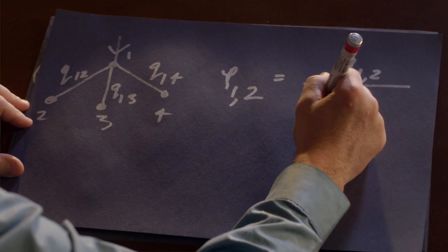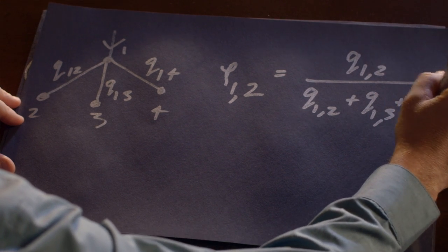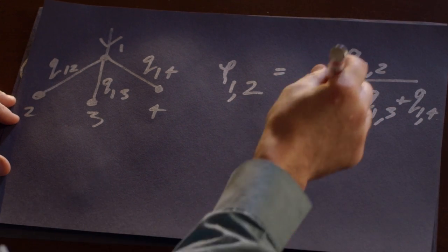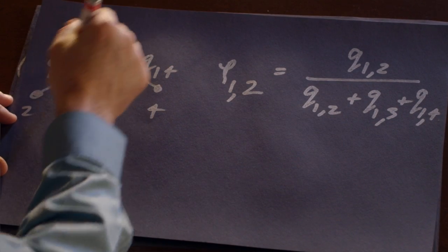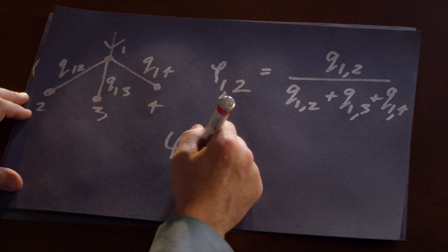So there's fluid going not just from one to two, but from one to three and one to four. So the probability that a particle traveling down this channel would then move to two is proportional to the amount of fluid moving in that direction.